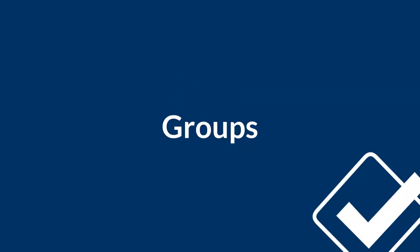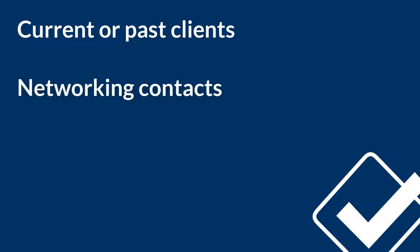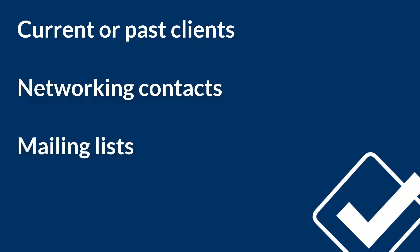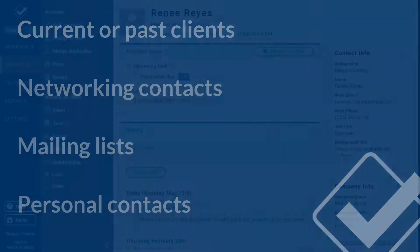Groups are a very basic way of creating lists of records that share something in common. A group can be a list of your active clients, a list of people you met at a specific meeting or a convention, or just about anything else. It's like a tagging or labeling system, and you can create as many different groups as you need.